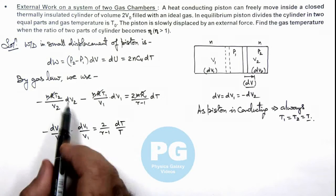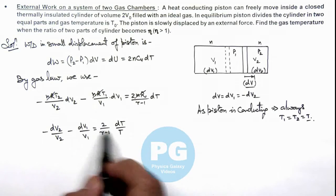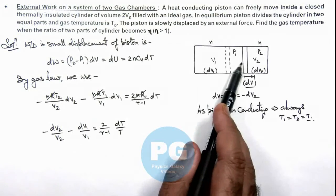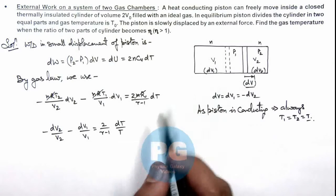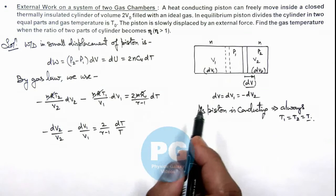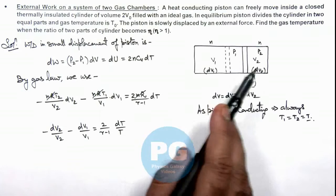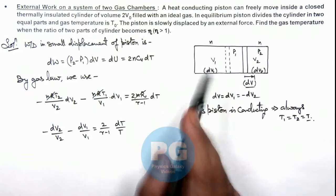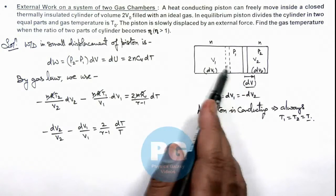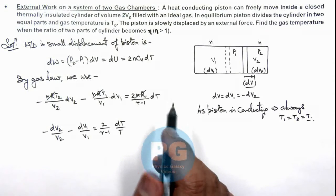Here I have taken T₁ equal to T₂ equal to T, as due to heat conducting piston on both sides temperature will always be equal. Even if it increases or decreases that will remain same, or equally, the temperature in two parts will increase or decrease.